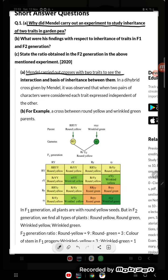Mendel carried out a cross with two traits—traits means character—to see the interaction and basis of inheritance between them. In a dihybrid cross given by Mendel, it was observed that when two pairs of characters were considered, each trait expressed independently of the other. So each trait expresses itself independently. This is the reason.